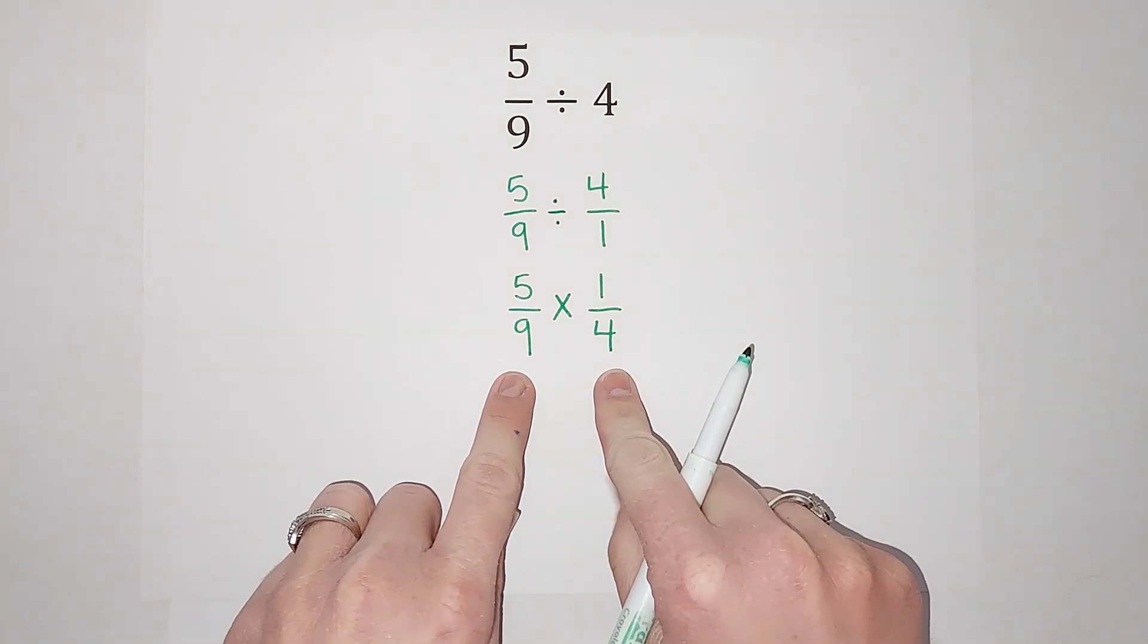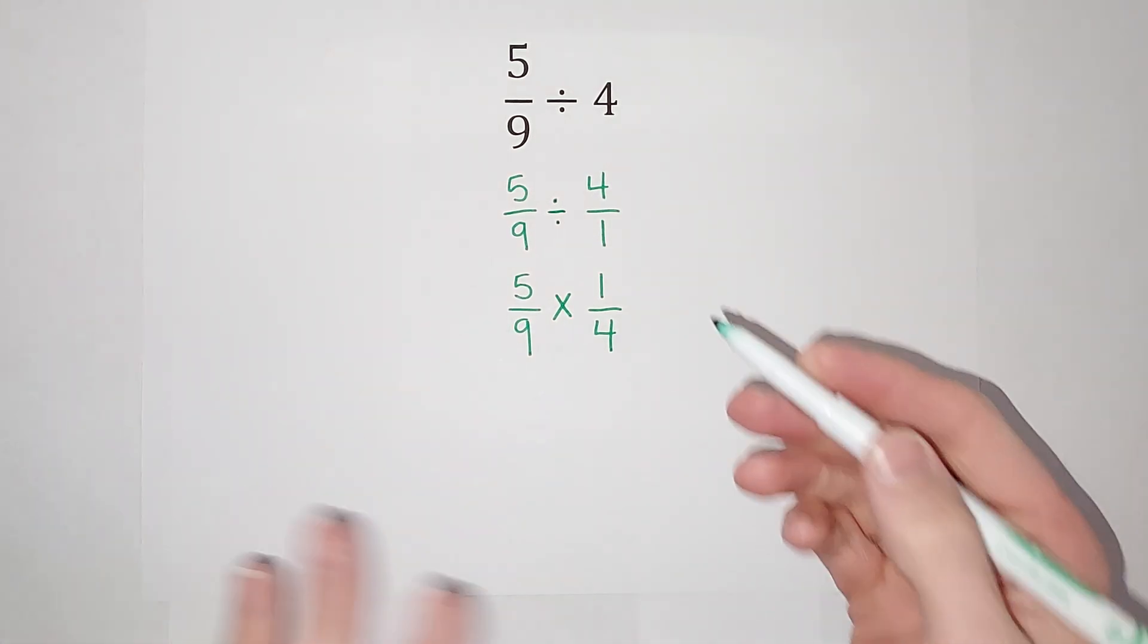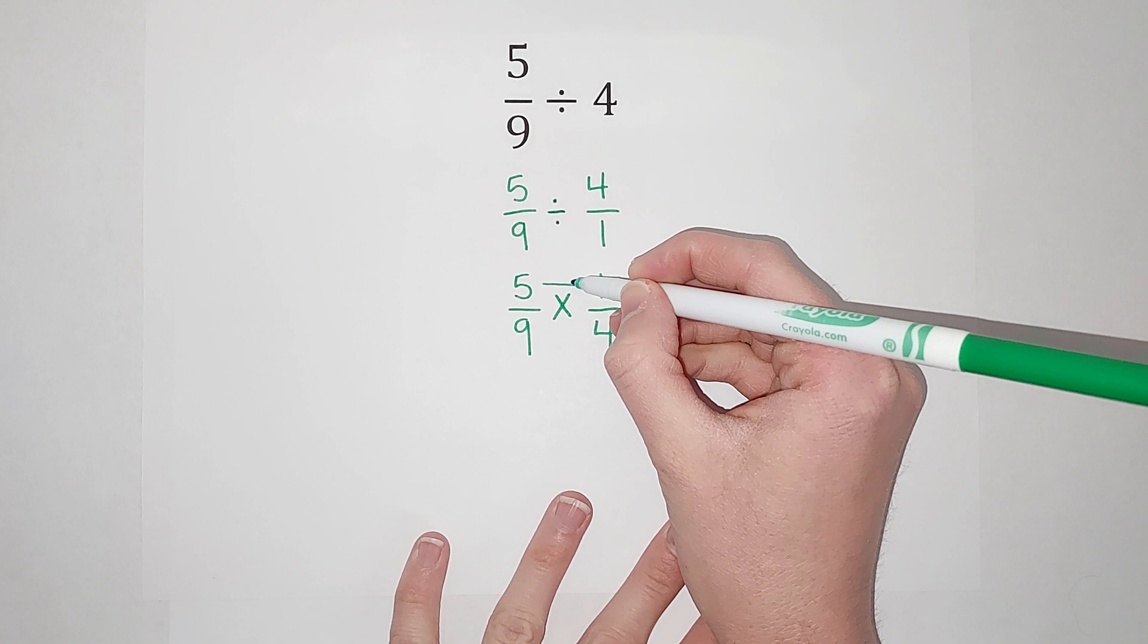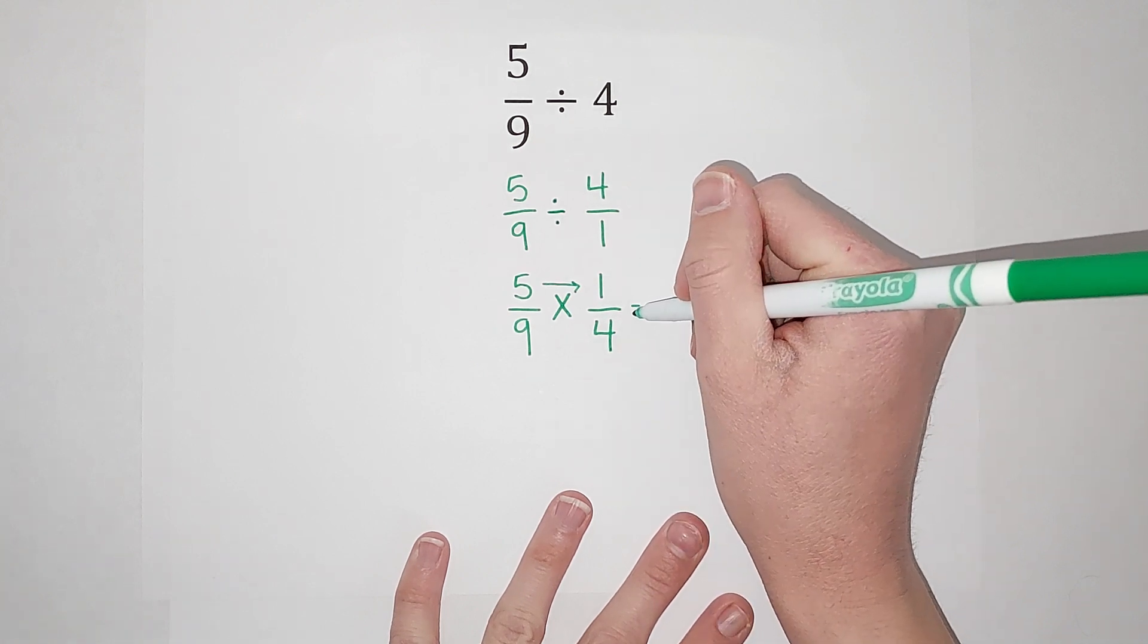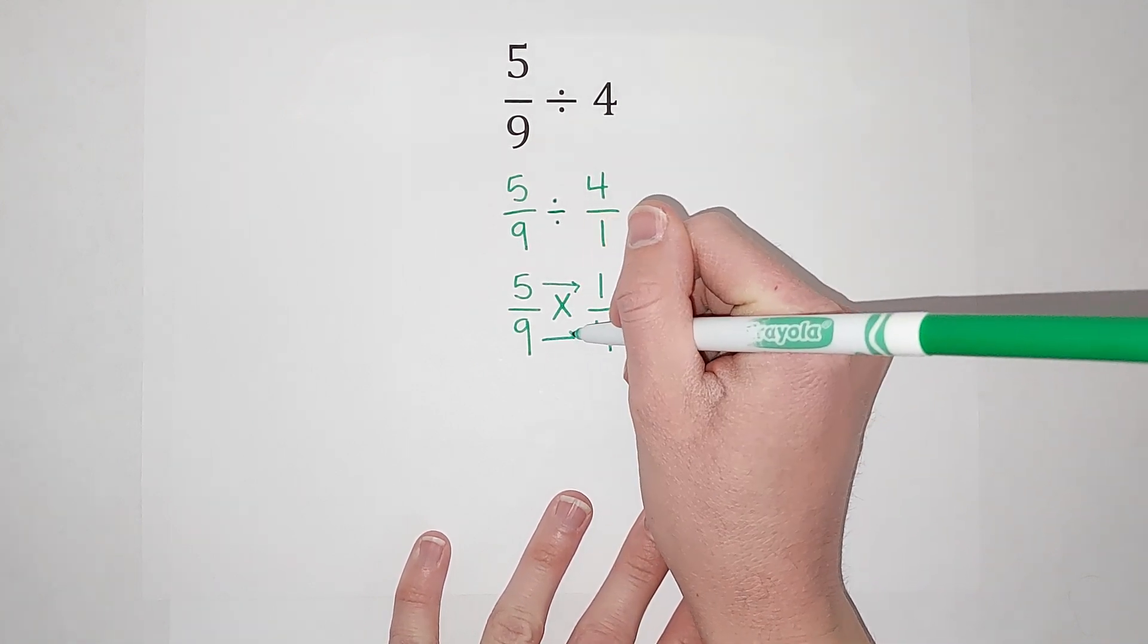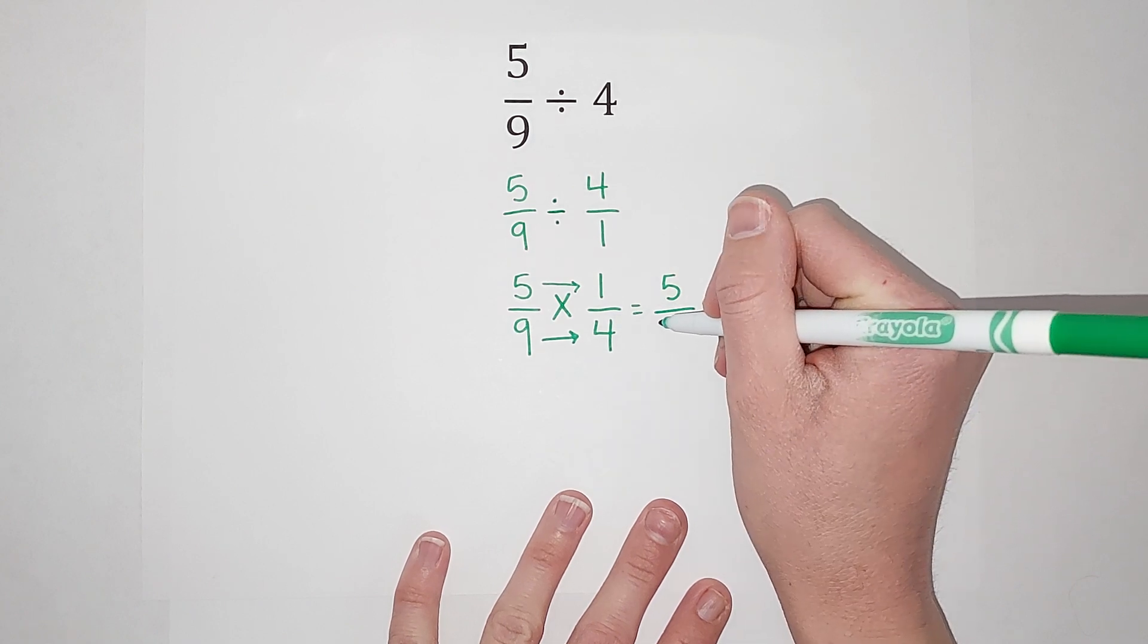Good news with multiplying fractions, our denominators do not have to be the same. So we can just multiply these. We multiply straight across, five times one gives me five, nine times four gives me 36.